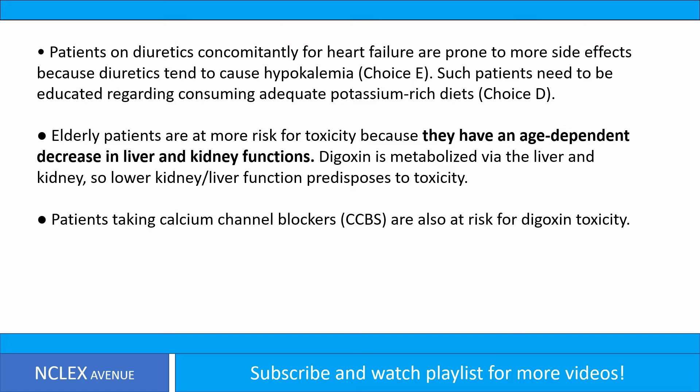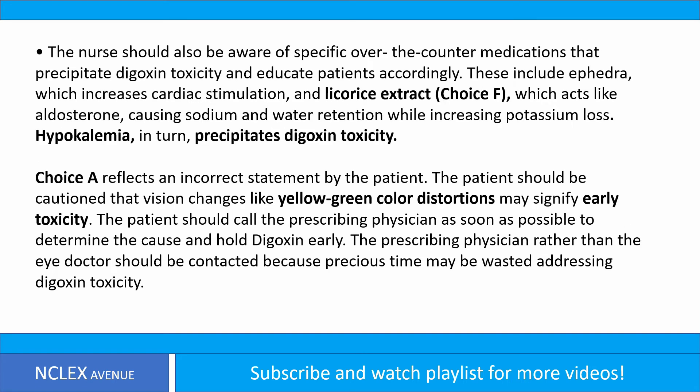Elderly patients are at more risk for toxicity because of age-dependent decreases in liver and kidney function; digoxin is metabolized via the liver and kidney, so lower function predisposes to toxicity. Patients taking calcium channel blockers (CCBs) are also at risk. The nurse should also be aware of over-the-counter medications that precipitate digoxin toxicity. These include ephedra, which increases cardiac stimulation, and licorice extract — choice F — which acts like aldosterone, causing sodium and water retention while increasing potassium loss, leading to hypokalemia and precipitating digoxin toxicity.